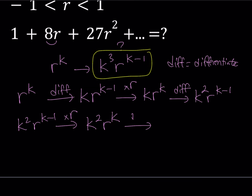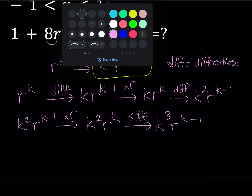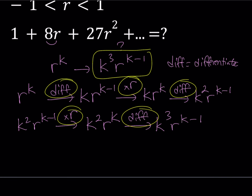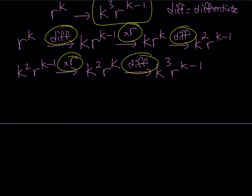So we're taking turns differentiating and multiplying by r. When we differentiate k squared r to the power k with respect to r, we get k cubed times r to the power k minus 1, which is what we need. So the steps needed are: differentiate, multiply by r, differentiate, multiply by r, and then differentiate — three differentiations and two multiplications by r.